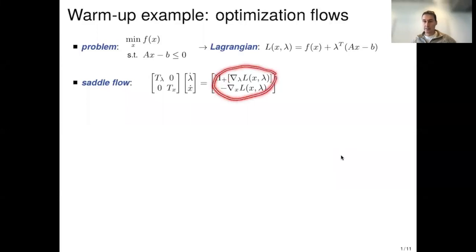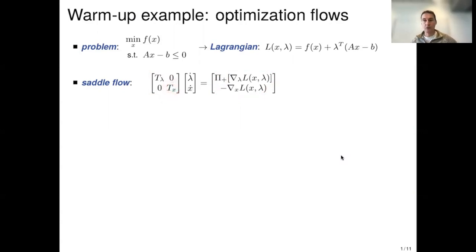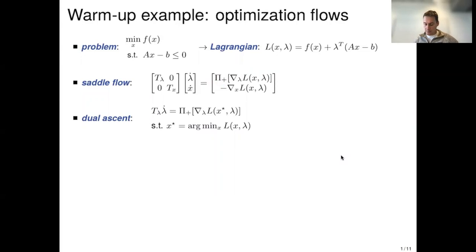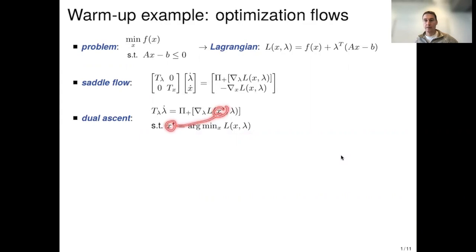This vector field seeks the saddle points of the Lagrangian; additionally you can equip it with time constants t_lambda and t_x to speed up the primal relative to the dual or vice versa. If you make the primal iteration much faster than the dual, you end up with dual ascent: the dual update increases the Lagrangian with a projection, but for the primal variable you compute right away the minimum of the Lagrangian — x-star is the argmin of L(x, lambda), which then enters the dual update.